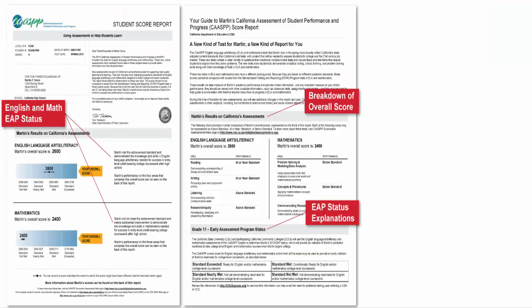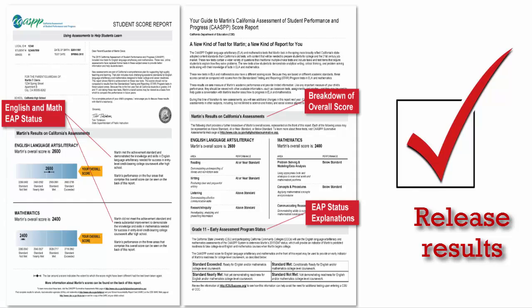Let your EAP results count by releasing them to the California State University system or to California community colleges. Simply mark the release button at the end of the CAASPP test — it is that easy. If you do not mark the release button, you will be required to submit your results at a later date.